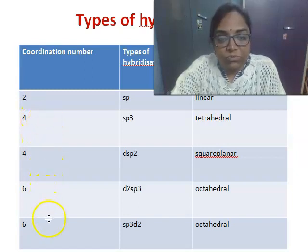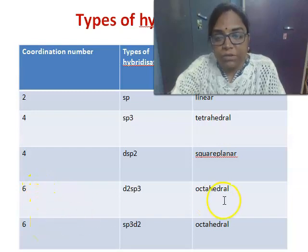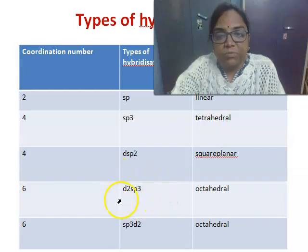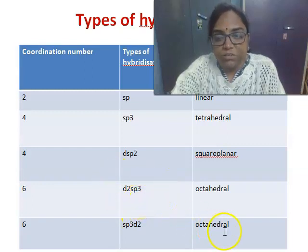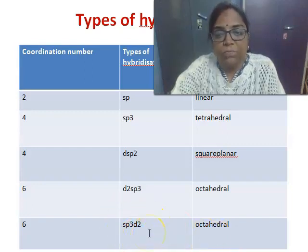For a coordination number of 6, in the case of an octahedral complex, the type of hybridization can be D2SP3. The same octahedral complex may also involve SP3D2 hybridization.